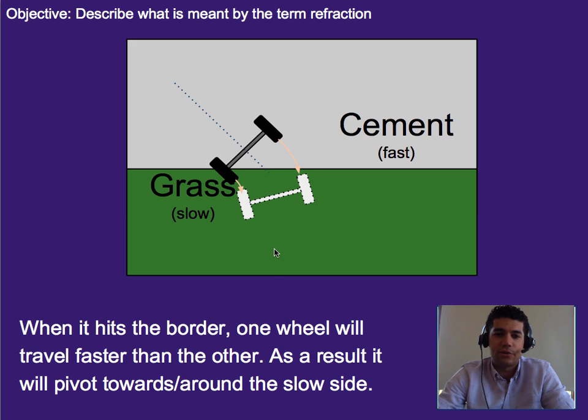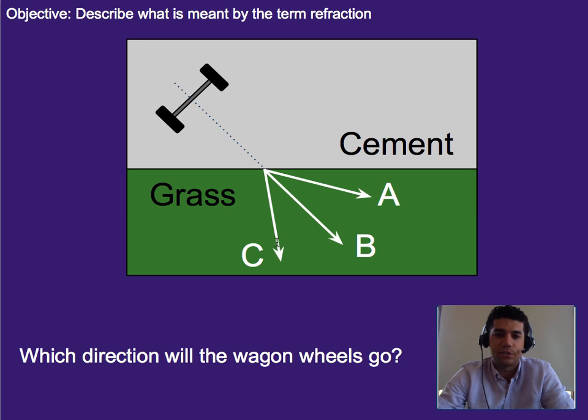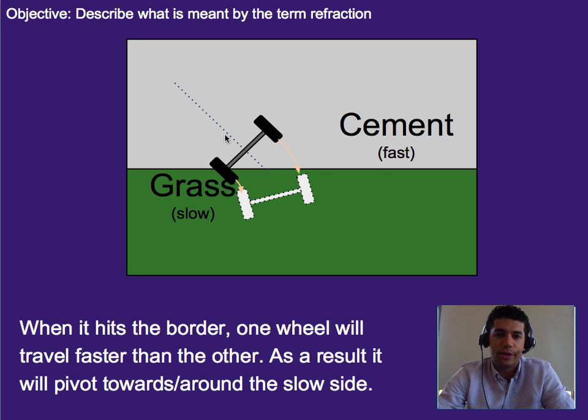All right, so in this case they would actually follow path C. The reason why is as they get closer we have one wheel that hits the grass and so it's going to move slower on the grass. Whereas the one that's on the cement is going to be moving faster.